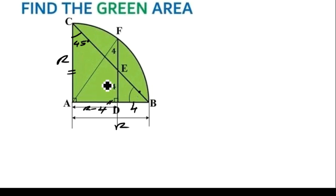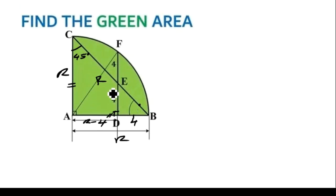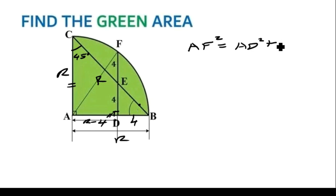If you look at triangle AFD, triangle AFD is a right angle triangle at D. The line from the center to the circumference, from A to F, is the radius R. Triangle ADF is a right angle triangle, so if you use Pythagoras theorem, A to F is the hypotenuse. So hypotenuse squared — AF squared — equals AD squared plus FD squared.